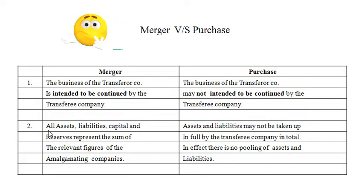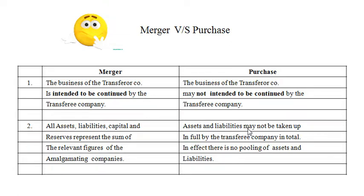Second point of difference: in merger, all the assets, liabilities, capital and reserves represent the sum of the relevant figures of the amalgamating companies — that is, they are all taken over by the amalgamated company. Whereas in case of purchase, assets and liabilities may not be taken up in full by the transferee company; there is no pooling of assets and liabilities.